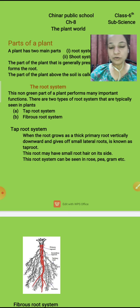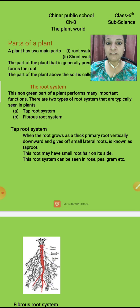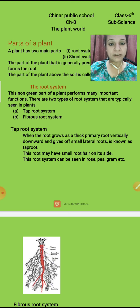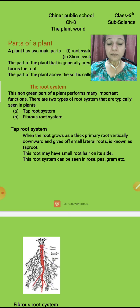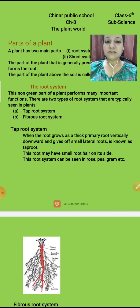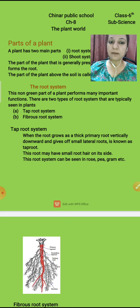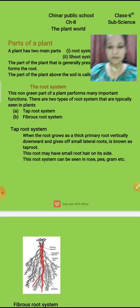Root means the non-green part of a plant which performs very important functions. There are two types of roots — one is tap root and second is fibrous root. So first we will read about the tap root.